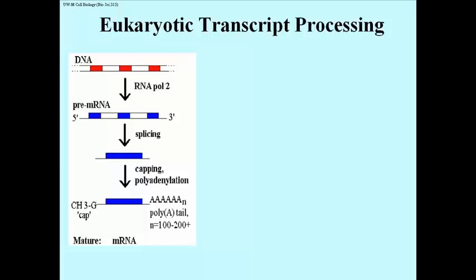mRNAs also undergo some additional processing. They get a methylguanosine cap at the 5' end of the RNA, and they get a poly-A tail.